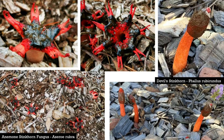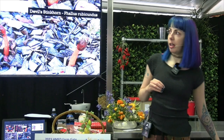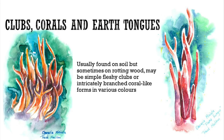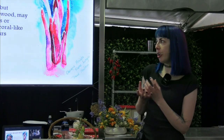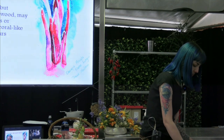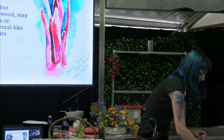Stinkhorns can become a pest when a lot of them come up in mulch — in council gardens and things like that — and they produce a pretty bad smell. Clubs, corals, and earth tongues are usually quite fleshy or quite intricate.